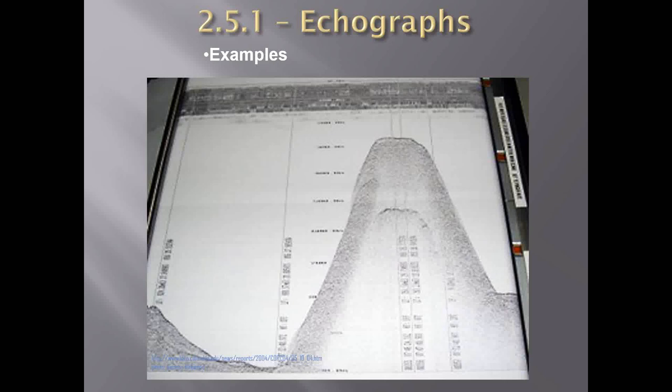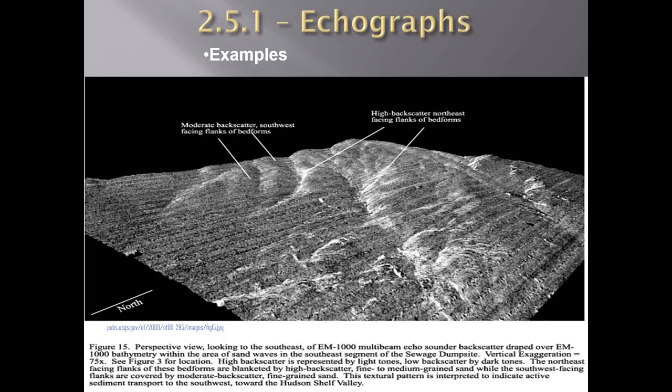Modern day echo graphs also record the contours of the seabed along with the depth of the water, which is useful evidence you can produce if any investigation is taking place. Sometimes the bottom line can also be seen even if a proportion of the echoes are false or lost. The measurement of depth and its display is performed by one simple mechanism, and all echoes are displayed. As you can see, even with modern day echo graphs, it is also showing the contours and profile of the seabed.